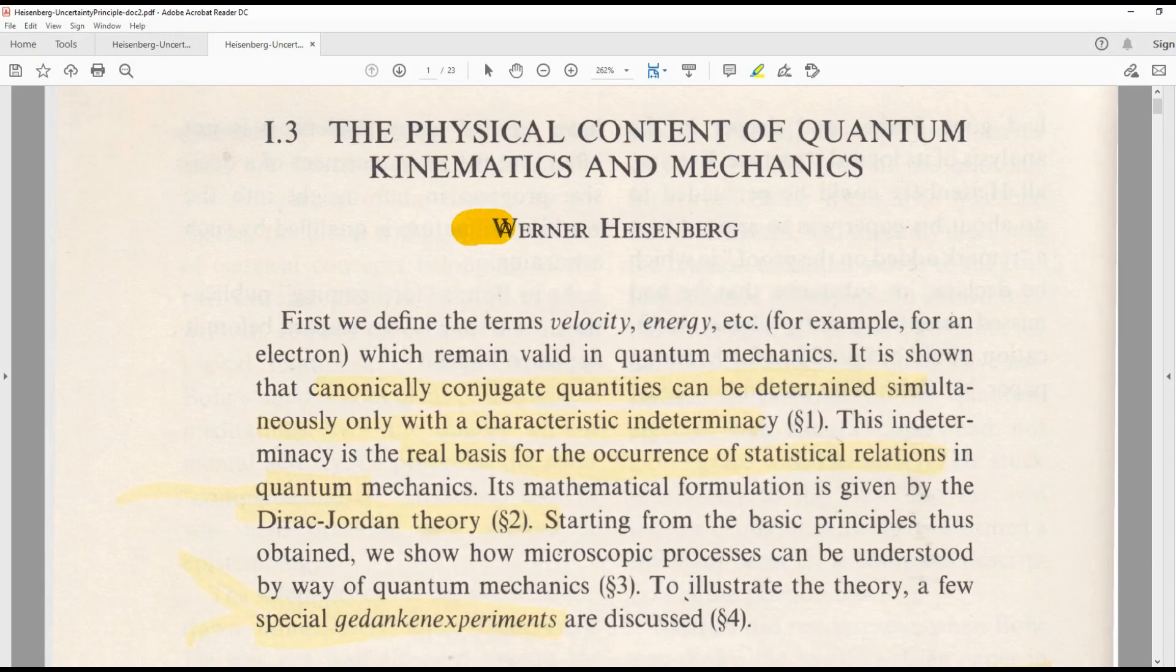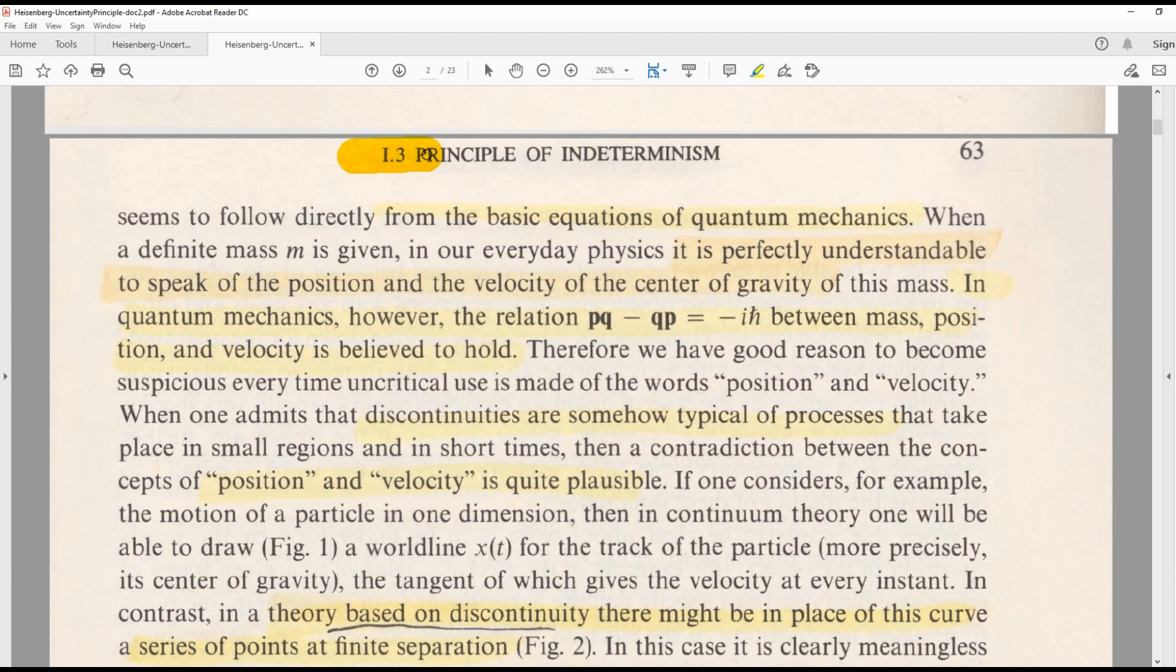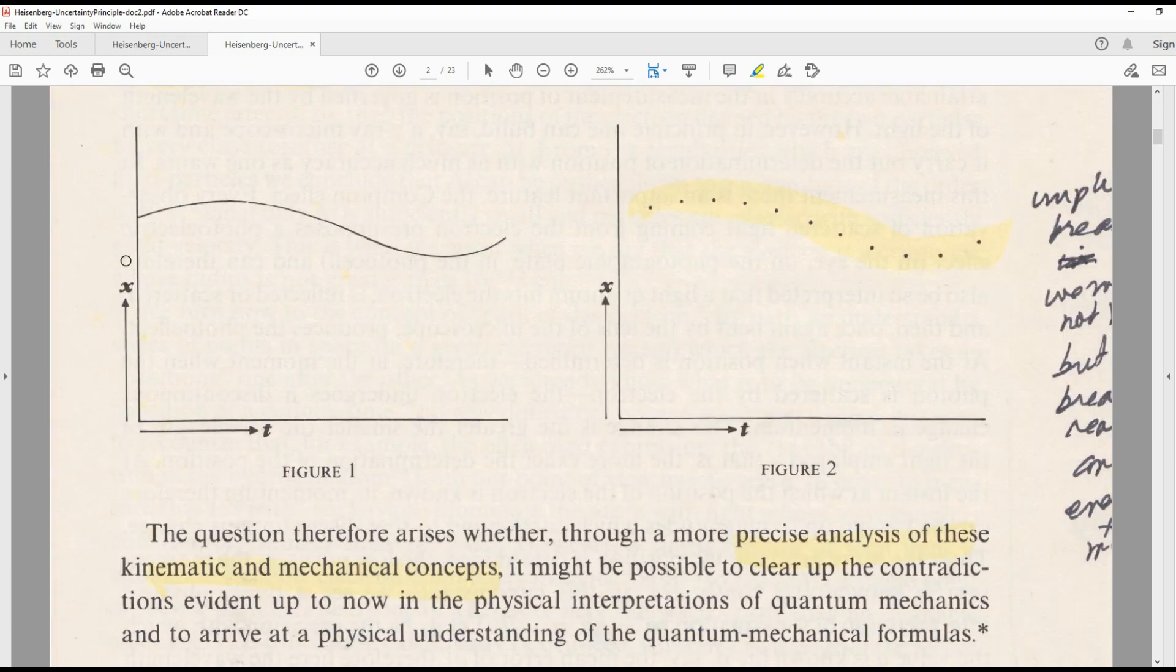But the EPR bug is telling us that there's a problem with the uncertainty principle. Another name that Heisenberg wanted to use for this paper was the principle of indeterminism. In this paper, Heisenberg is trying to convince us that the quantum world cannot be determined by this type of continuous line, and you have to look at it as discrete points.